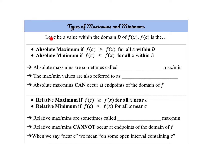Let's say c is some value within the domain of f of x. We would call f of c the absolute maximum if f of c is greater than f of x for all values of x within the domain. And we would call it the absolute minimum if f of c is less than or equal to f of x for all x values within the domain. When you see absolute maximum or minimum, it means it is the absolute highest or lowest point — there are no points that are higher or lower.